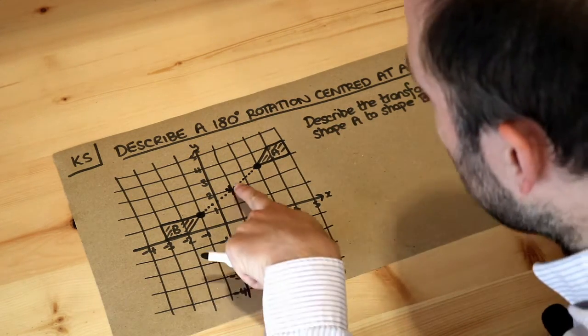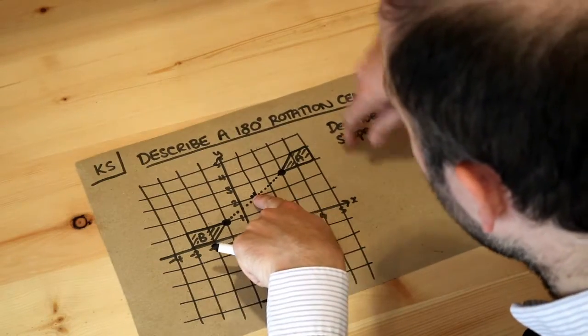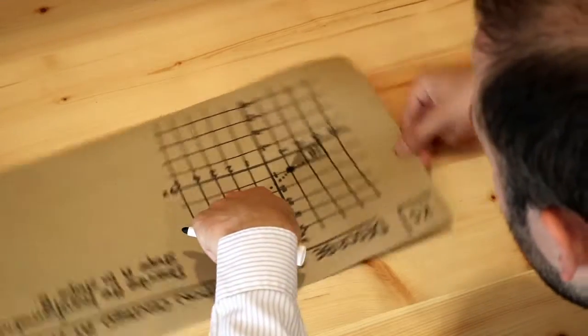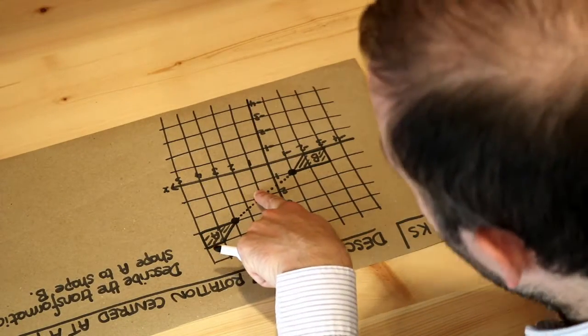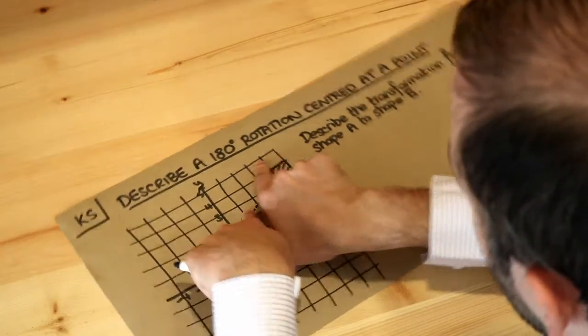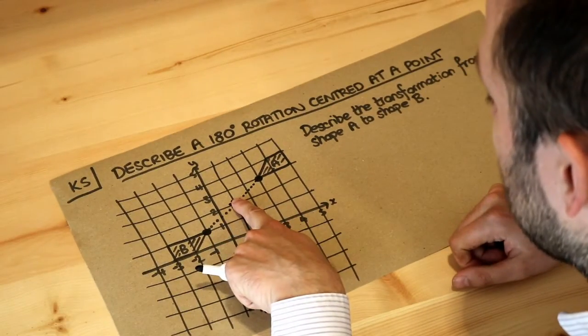Can you see that if I put my finger here and rotate the paper so shape A spins around, A is now where B previously was. These shapes have rotated around so each shape is swapped in position.